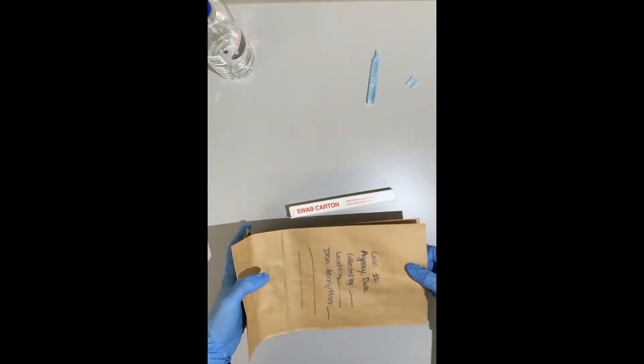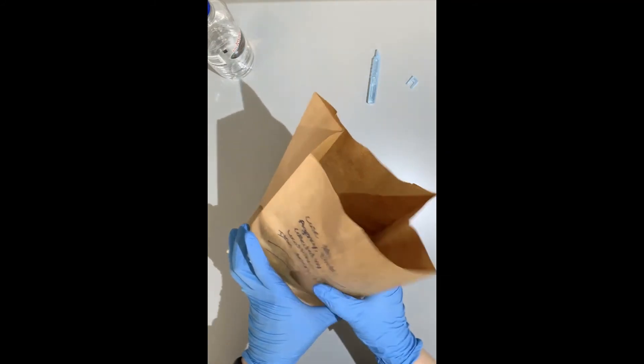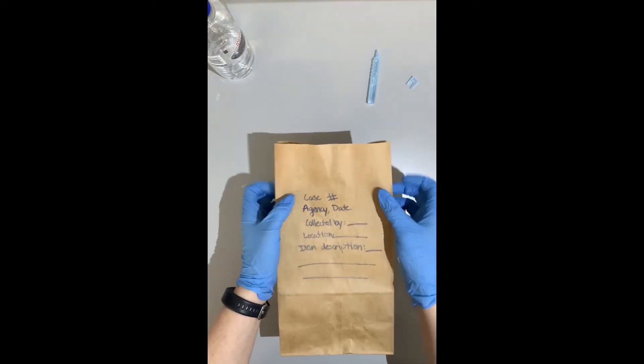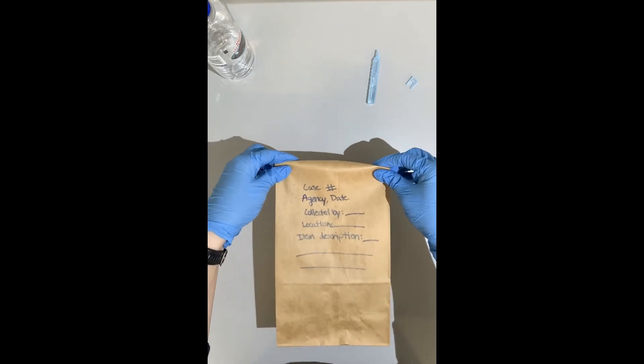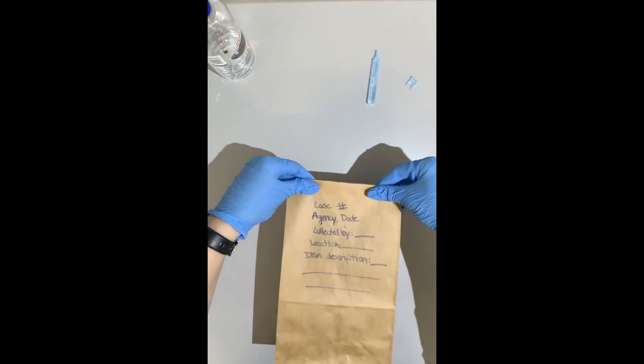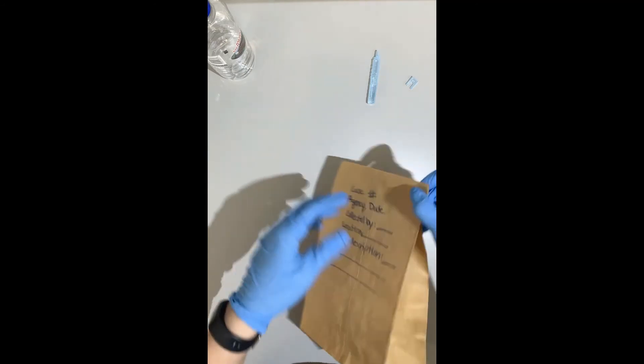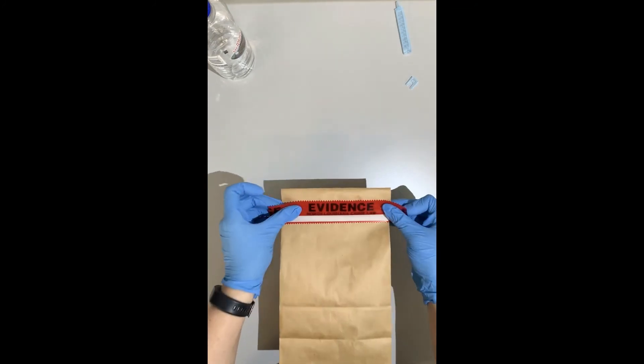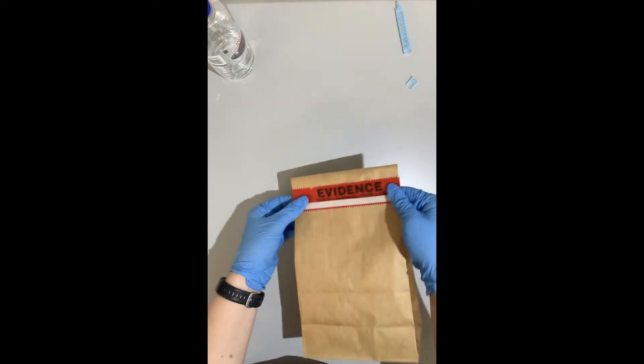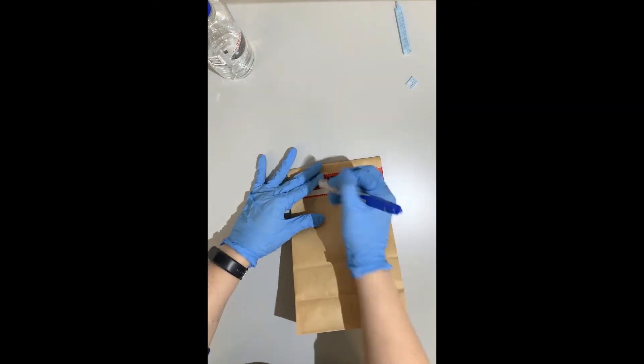We've got our evidence bag that has been labeled with our agency case name, our case number, my name, and we'll place it inside of our brown paper bag. And then the same thing, we want to fold this top down, making sure that none of the front information has been affected, get a piece of evidence tape, close it up, wrap around the sides and initial.